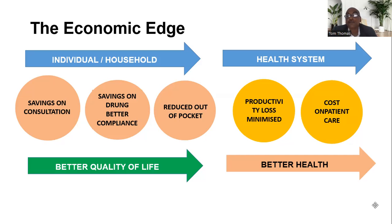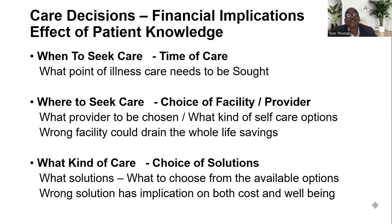From a health system perspective, there is a very important economic edge because governments have many other priorities. Putting additional budget into health spending can be very difficult. Bad health can produce a lot of economic impact — many countries are still unable to recover from the economic shock created by COVID. Creating a population with health literacy is important, but patient empowerment goes beyond health literacy. Care decisions have a lot of financial implications, which can be regulated if the patient has adequate knowledge.